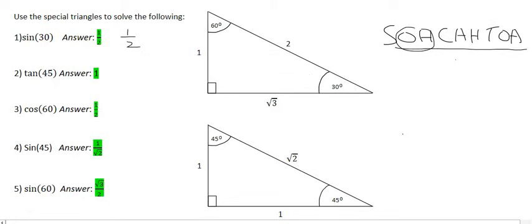Moving on to number two, we're going to be looking at the tan of 45. You can use either 45 — I'm going to use this one over here. We know that tan is the opposite over the adjacent, which is just one over one. Well, one over one is just one.